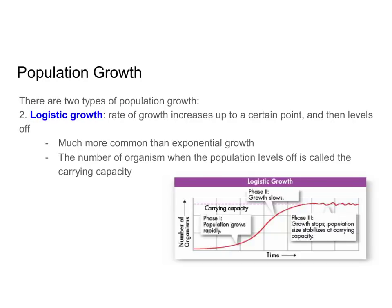We can contrast this with logistic growth. Logistic growth actually is exponential at the beginning — you can see that part outlined in black. But at some point the environment can no longer support this really rapid growth. There aren't enough resources for all these individuals, predators are working to keep the population in check, and at some point the population growth will level out. The place where it levels out is called the carrying capacity.